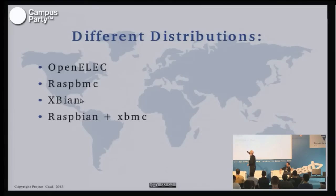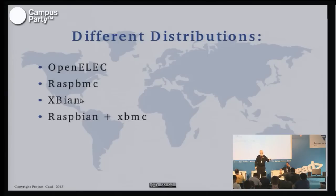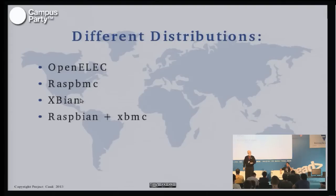And finally, the last option is if you want to roll your own — if you want to make some changes along the way, you can install the base version of Linux for the Raspberry Pi called Raspbian. It's actually a Debian distribution that's been tailored for the Raspberry Pi. Then you can build XBMC on top of Raspbian yourself and change it as you go along — all of the source code is available.